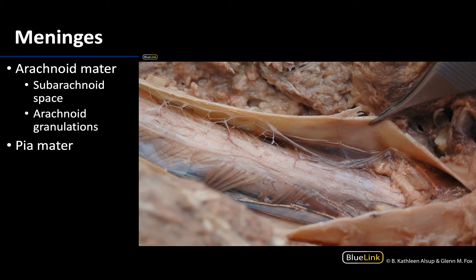Looking at the spinal cord — I know it isn't in this particular session, but I want to review a few things quickly, as it is sometimes easier to see these deeper meninges. The pia mater is very closely adhered to the spinal cord, making it look shiny. The forceps are holding on to the dura mater with the arachnoid mater very closely adhered to it. Also nicely visible are the arachnoid trabeculae, which give the spiderweb-like appearance associated with the arachnoid and explain its name. The trabeculae are located within the subarachnoid space that separates the arachnoid and pia mater, which also contains vessels and CSF — cerebrospinal fluid — during life.